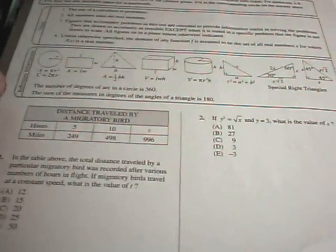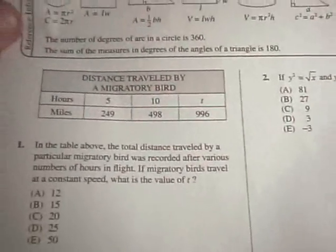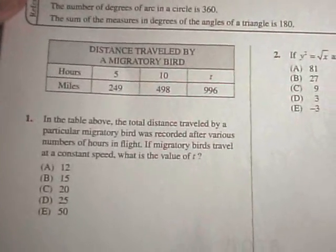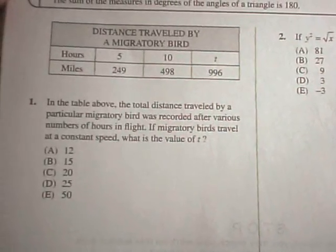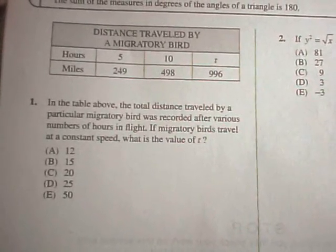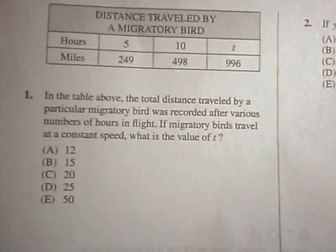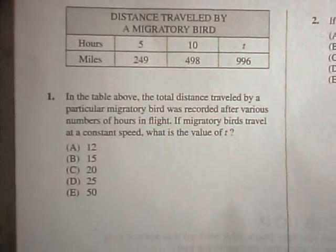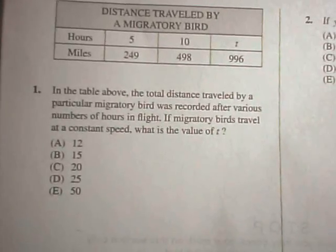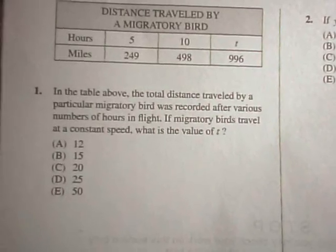Alright, in this video I'm going to work out some practice SAT math questions, and I'm not going to write the questions down, but here they are. So number one it says, we've got this table. Total distance traveled by a particular bird was recorded after various numbers of hours in flight. It says it travels at a constant speed, so what's the value of t?